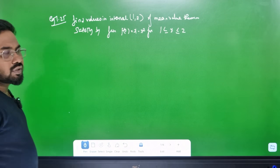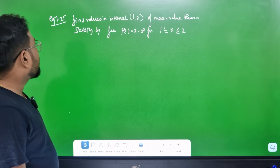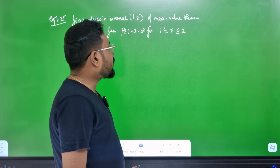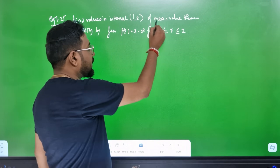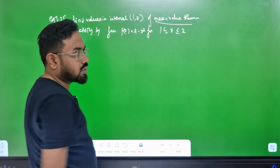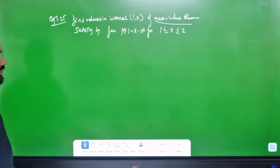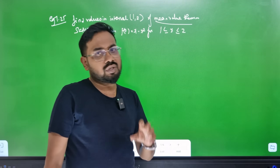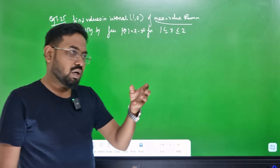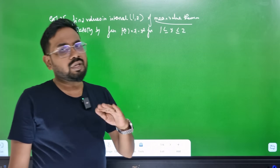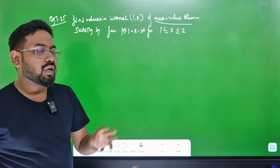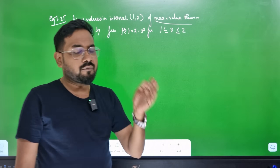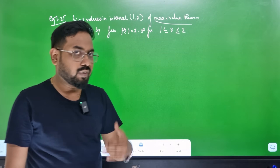We will get to Example 7.45: find the values in interval [1,2] of the Mean Value Theorem. The Mean Value Theorem is Lagrange's theorem. Lagrange's theorem procedure: first, f is continuous and then differentiable. Then f'(c) equals f(b) minus f(a) divided by b minus a — that is the formula.